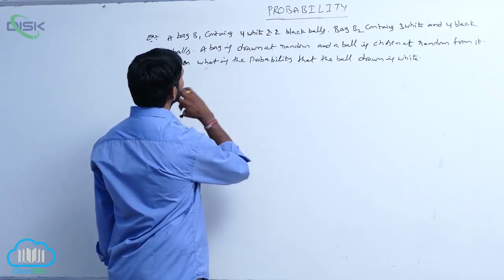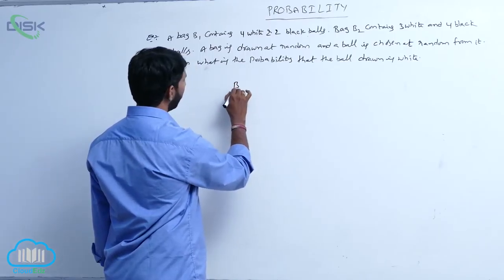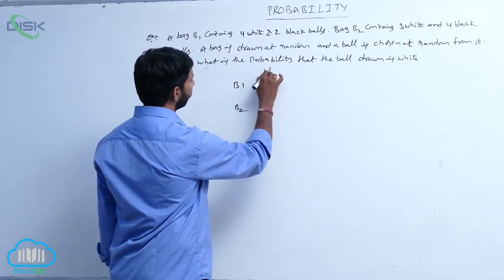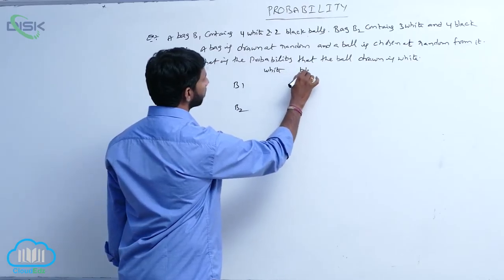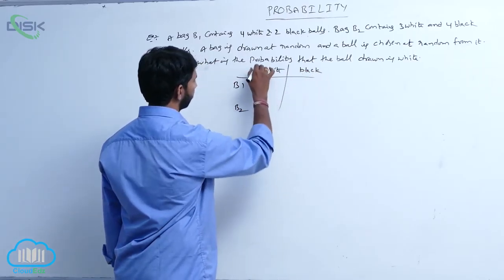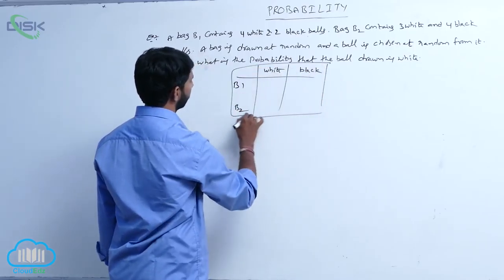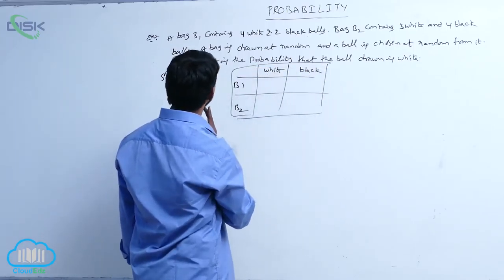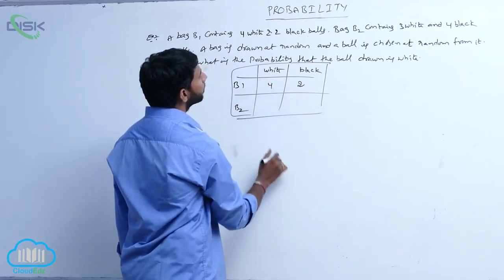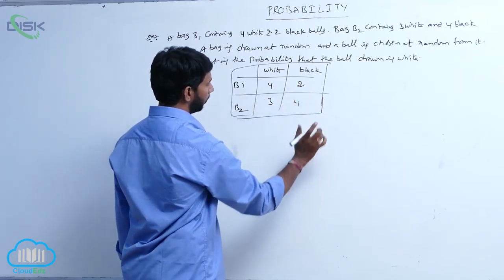Draw the table for the balls: bag B1 and bag B2, with white balls and black balls. The first bag contains 4 white balls and 2 black balls. The second bag contains 3 white balls and 4 black balls.